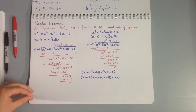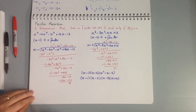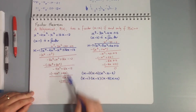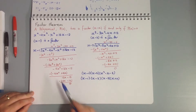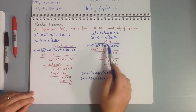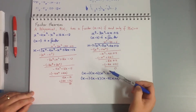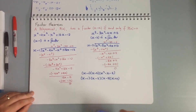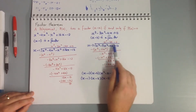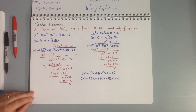So the process is: find a factor, do polynomial division, find a factor of what's left, do division again, until you get down to a quadratic, then factorize that. Worst case you may need to use the general quadratic formula.